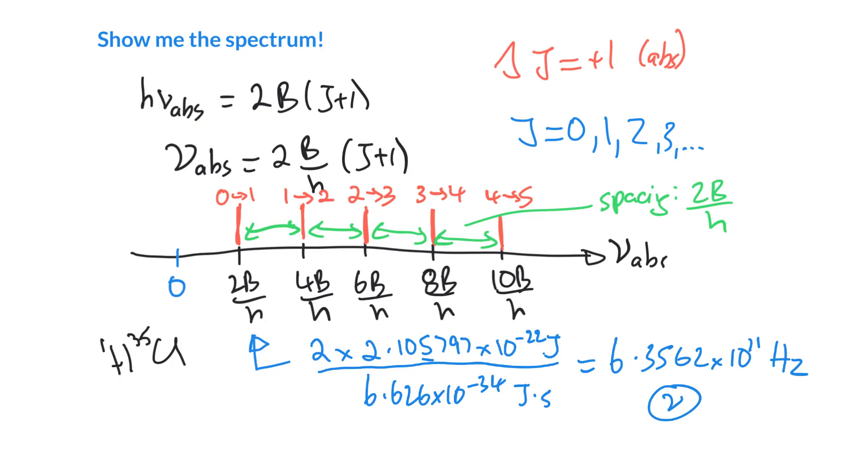Seconds to the minus 1 are also known as hertz. That's kind of a large number, 10^9 would be giga, so that would be 635.6 gigahertz.